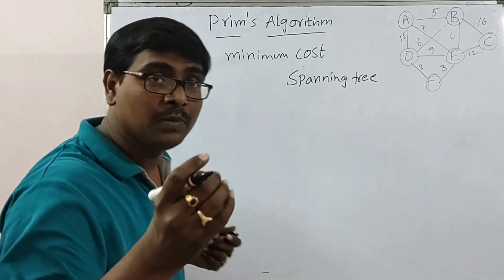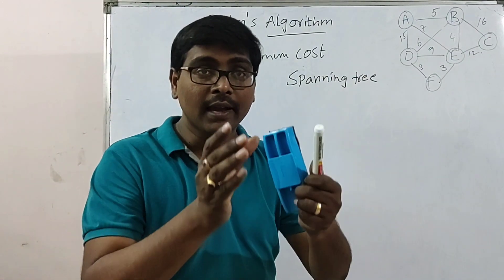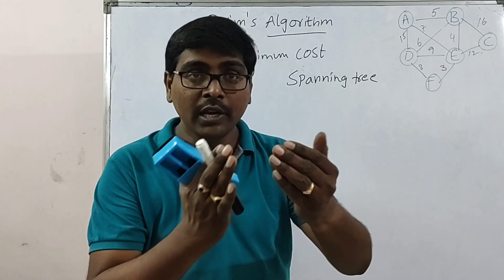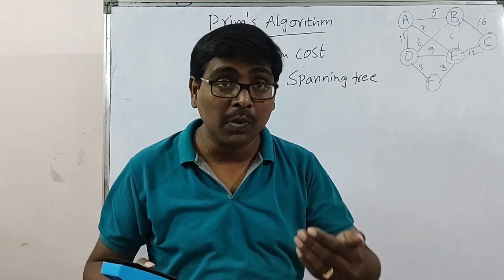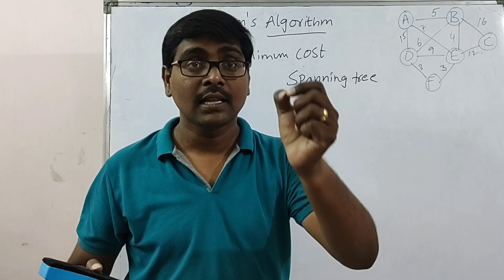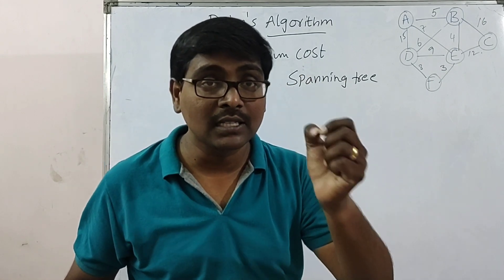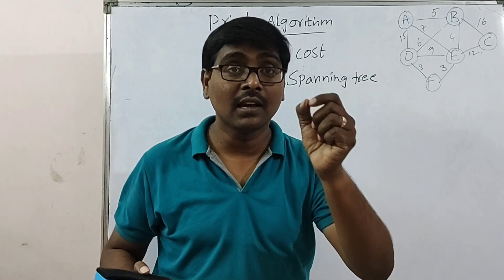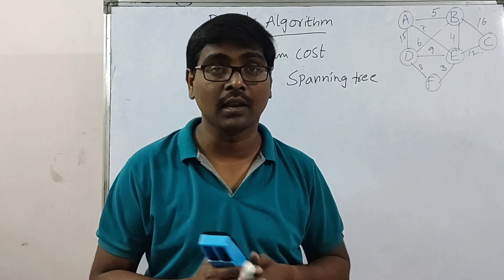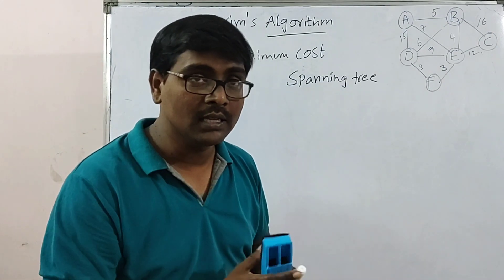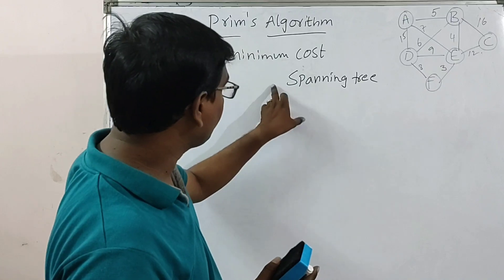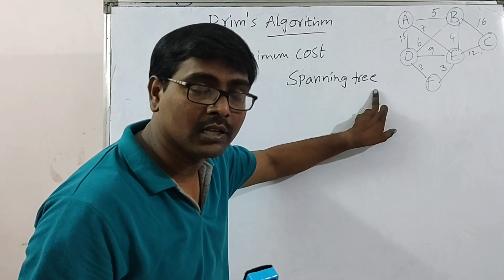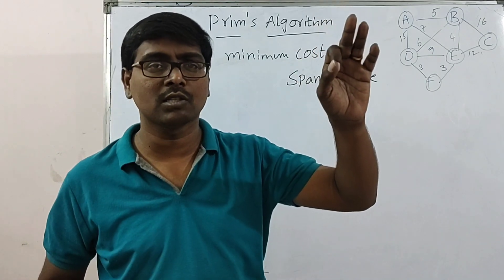First of all, what is meant by a spanning tree? A graph is given. From the graph, you need to construct a subgraph such that the subgraph does not consist of any cycle. Then that graph is called a spanning tree. For a given graph, you can construct any number of spanning trees — many spanning trees are possible.